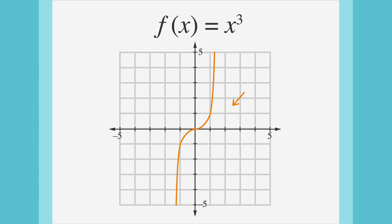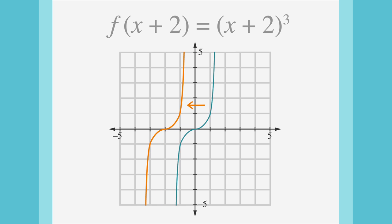And what if we wanted to shift the function to the left? We'd add 2 to every x value. Algebraically, if we substitute x plus 2 in place of x, and remember to use parentheses, we find that the new function would be x plus 2 quantity cubed. The graph shows this shift.